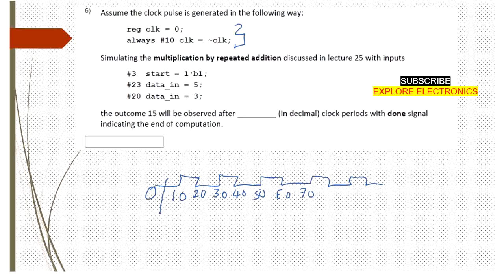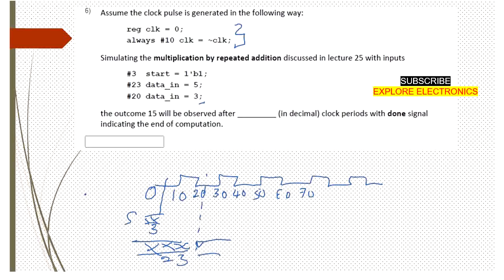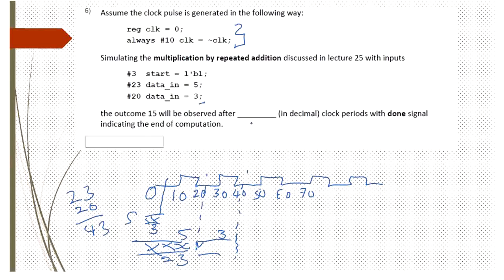After 3 time units, the start signal becomes 1. Up to 23 time units, the data_in is unknown, and after 23 time units data_in is loaded with the first value. The second value, 3, is loaded after 20 more time units — that is, at 43 time units — and the next data value 5 is loaded there. The procedure is repeated addition.